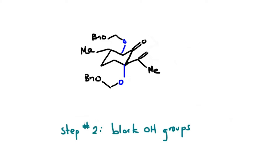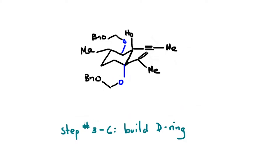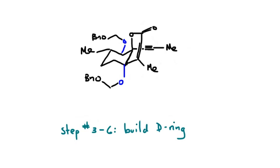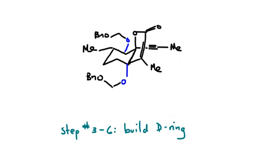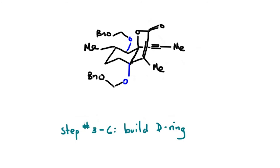At this stage, we decided it was time to make the D ring of ryanodol. This is a lactone ring, and we do this in a few reactions. First, we add three carbons and two carbons, and then we perform a cyclization reaction that's catalyzed by silver. The cyclization gives the lactone.